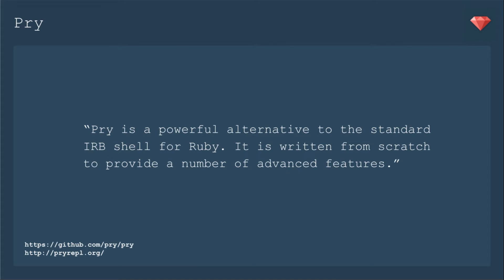Pry is a powerful alternative to the standard IRB shell for Ruby. It is written from scratch to provide a number of advanced features. I could do a series of videos on Pry — there is so much to be learned about it and so many ways that you can use it. At the end of the video, I'll point you toward a few more videos people have done in the past. Today, I'm just going to give an overview of a few of the other gems I used with Pry and one real-world example of how to use it in debugging.